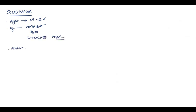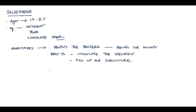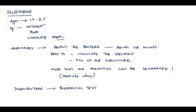Let's start with solid media. This media is made solid by adding 1.5 to 2% agar. A few of the most commonly used solid media are nutrient agar, blood agar, and chocolate agar media. We mainly use this media to identify the bacteria because we can see the colony. Also, it's very easy to inoculate the specimen and pick up bacteria for subculture. A big advantage is here more than one organism can be separated because each type forms a separate colony. One disadvantage here is biochemical tests cannot be performed in these types of media.